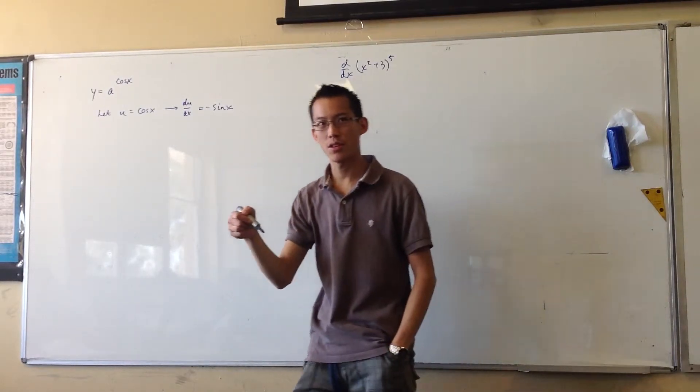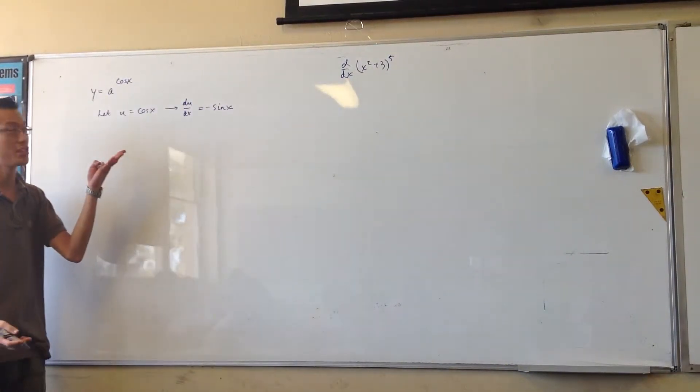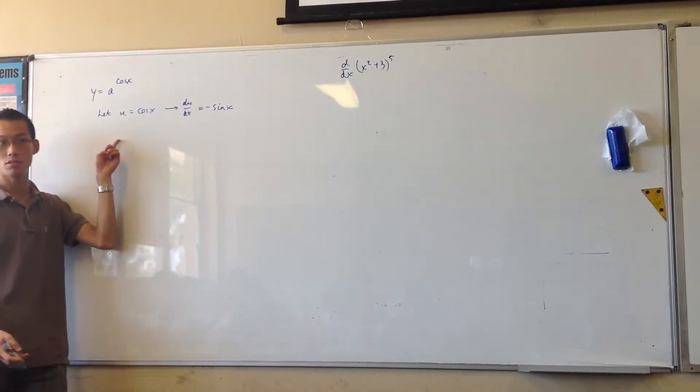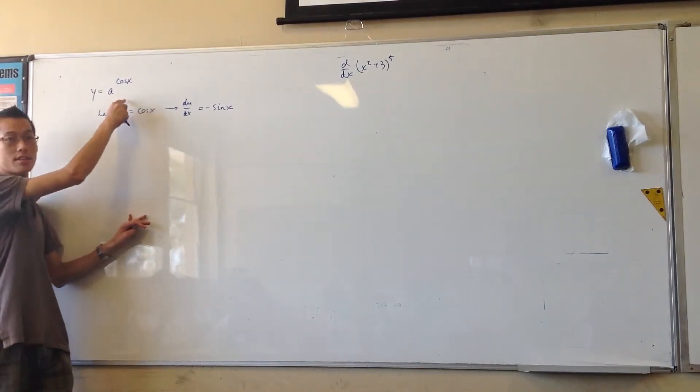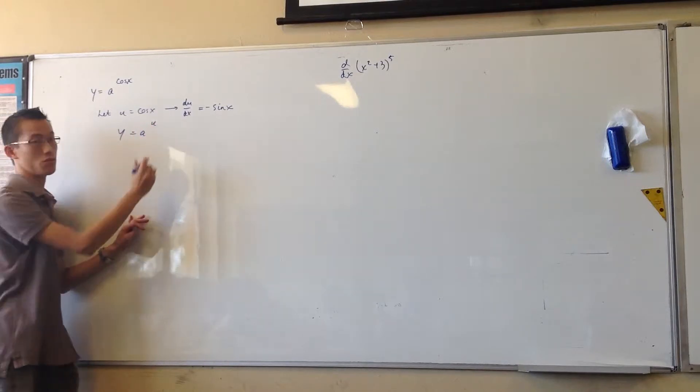now you've got to do the outside. So in order to do the outside, I need to rephrase it in terms of my substitution. So this is no longer a to the cos x, it's just y is a to the u.